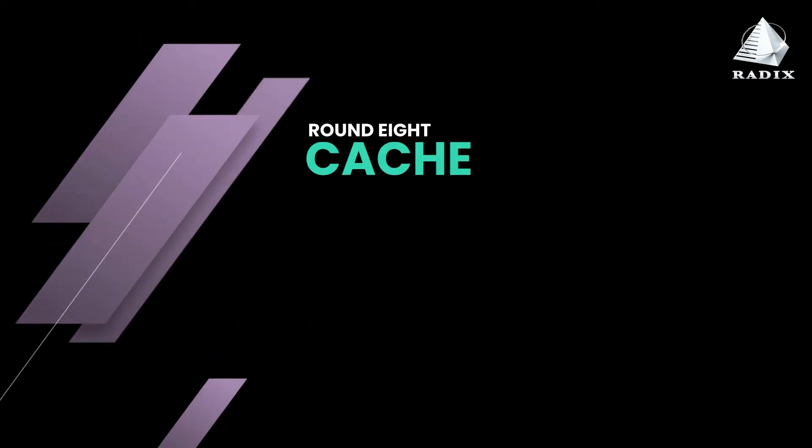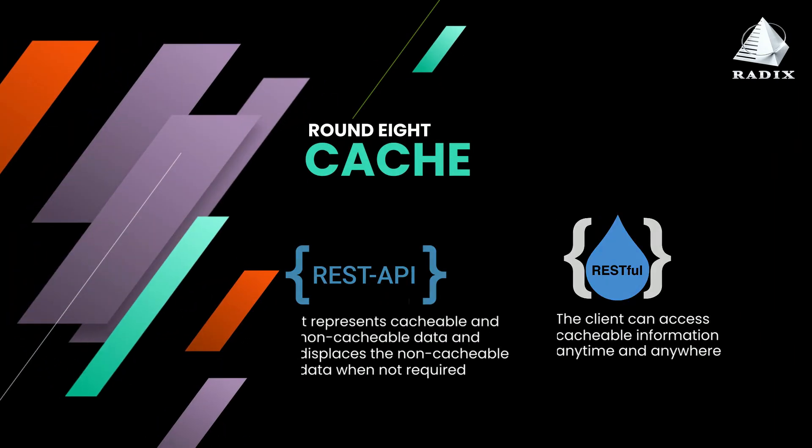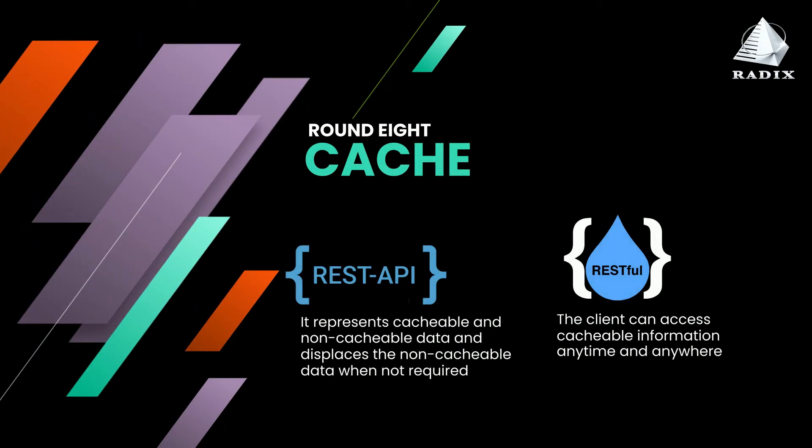8. Cache. REST APIs represent cacheable and non-cacheable data, and displace the non-cacheable data when not required. With RESTful APIs, the client can access cacheable information anytime and anywhere.